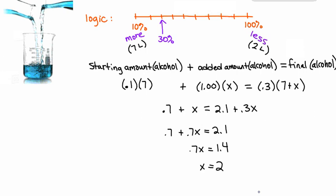And then for an algebraic check, you can plug the number 2 back in for x. And we have 0.7 plus 2 on one side of the equation and 0.3 times 7 plus 2 on the other side of the equation. So we have 2.7 equals 0.3 times 9. That's also 2.7.